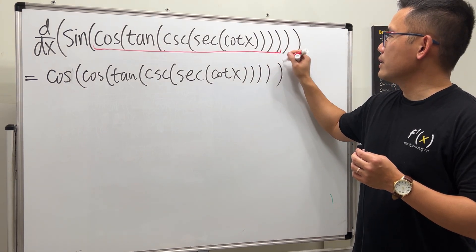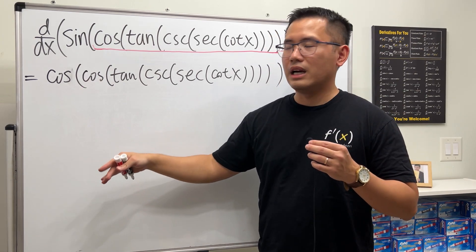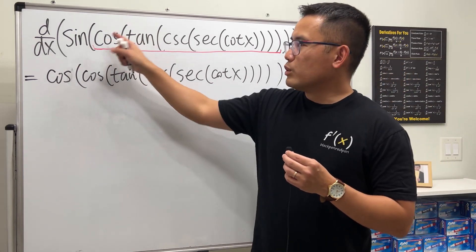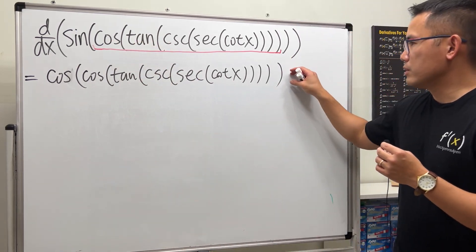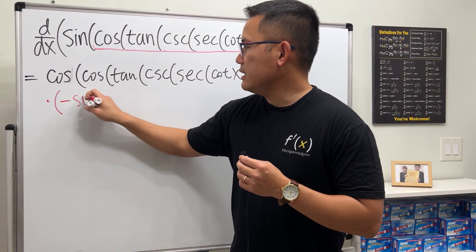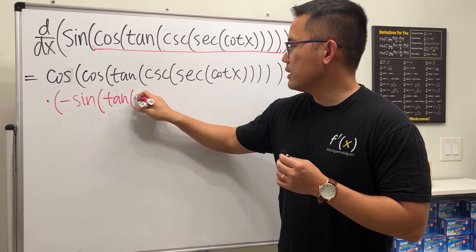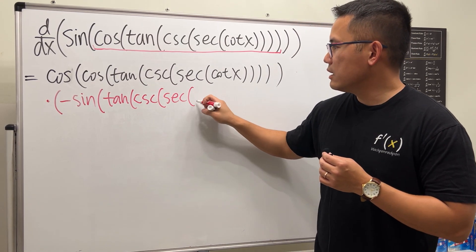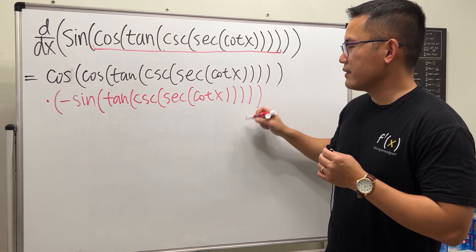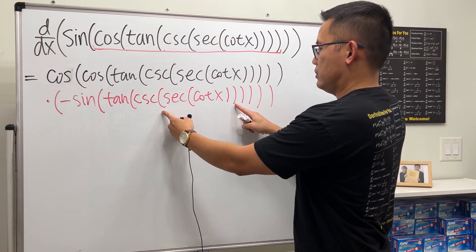This is like a Russian nesting doll — you have the first layer, the second layer, the third layer, and so on. Next, we multiply by the derivative of the next layer. The derivative of cosine is negative sine, so we multiply by negative sine of tangent of cosecant of secant of cotangent of x.